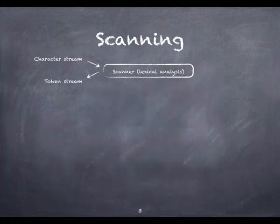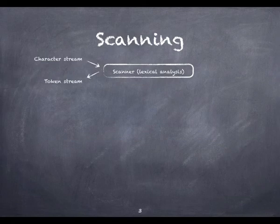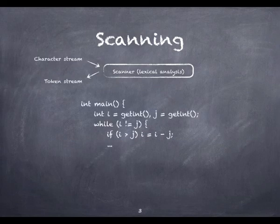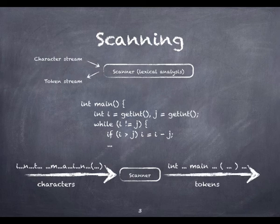Let's start by looking at scanning. Scanning and parsing serve to recognize the structure of the program, without regard to its meaning. The scanner reads characters and groups them into tokens, which are the smallest meaningful units of the program. For example, given a simple program like this, the scanner would receive the individual characters and group the characters into tokens.